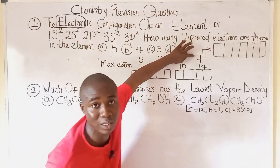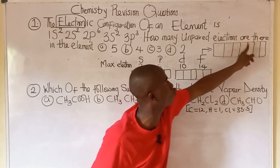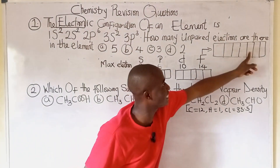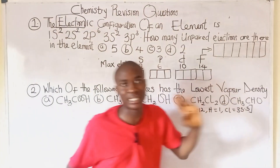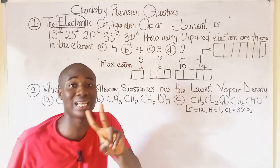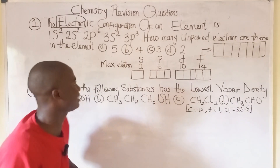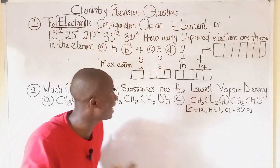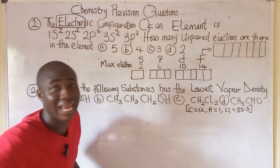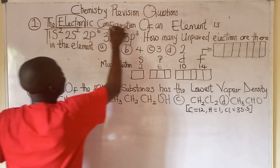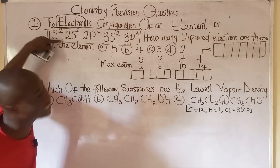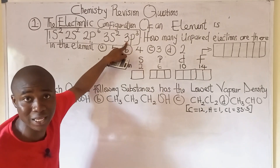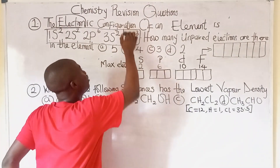The f orbital contains 14 electrons: 2, 4, 6, 8, 10, 12, 14 — because each box takes a maximum of 2 electrons. Now how do we solve the question? The question asks how many unpaired electrons are in this element. We look at the electronic configuration given: 1s² 2s² 2p⁶ 3s² 3p³.